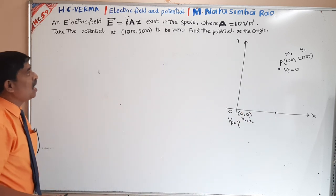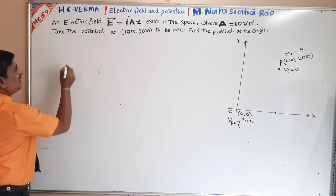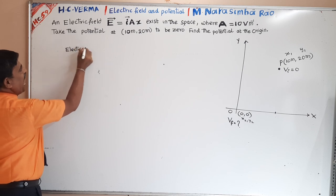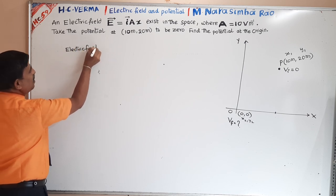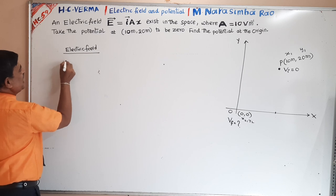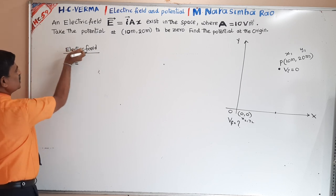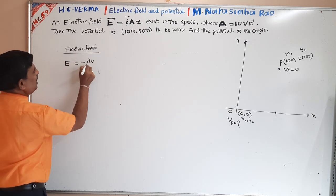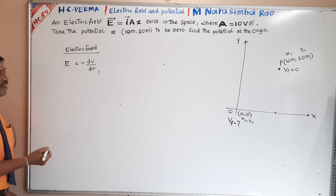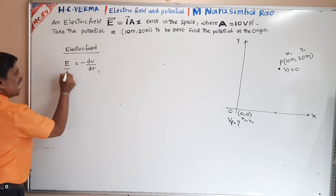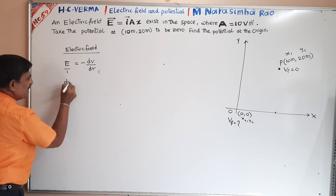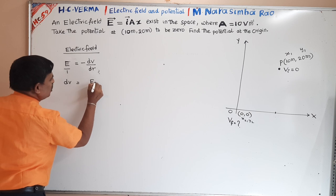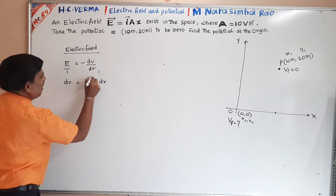We have one formula: electric field E is equal to minus dV by dR. This can be written as dV equals minus E dot dR, where dV is the difference in potential between two very close points.